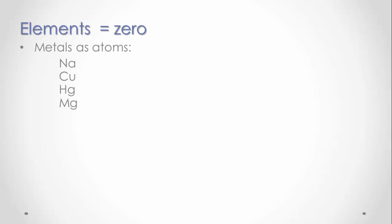The first rule applies to atoms in their elemental state. These atoms still have all of their electrons, so their oxidation states are zero. This includes atoms in metallic substances or metals, and the atoms of non-metals in their molecules. These all have oxidation states of zero.